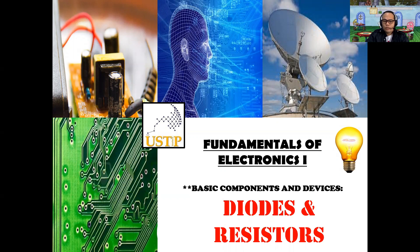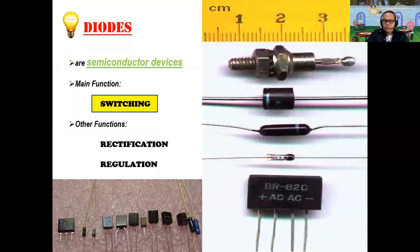Let's try to know what are diodes and what are resistors in the field of electronics engineering. What you see in the pictures here are examples of diodes. Here's a ruler — these are the usual length of diodes when you buy one in the market. There are different forms of diodes. Diodes are semiconductor devices, which means they have characteristics of both a conductor and an insulator.